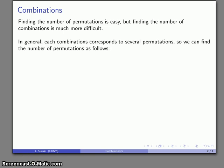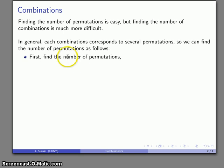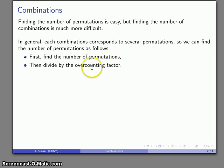The general approach to finding the number of combinations is as follows. In general, every combination corresponds to several distinct permutations, so we can find the number of combinations by first finding the number of permutations and then dividing by whatever the overcounting factor is. So let's see how that might work.